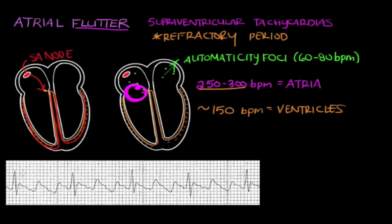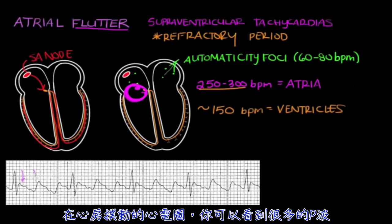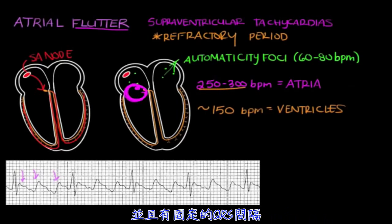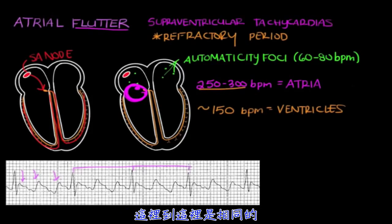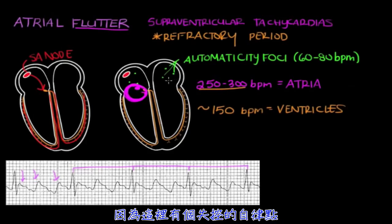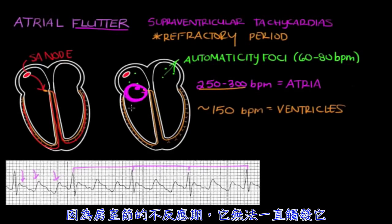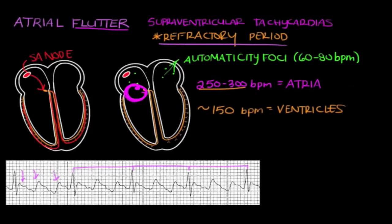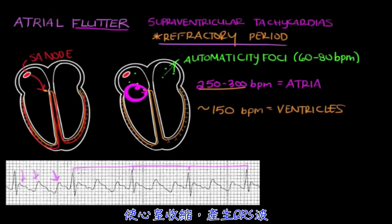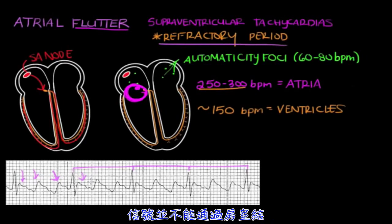With an atrial flutter EKG, you're going to see multiple P waves and regular spaced QRS intervals. The R-to-R interval is consistent throughout. The multiple P waves occur because the irritable automaticity focus is overfiring, but it won't conduct through the AV node every time because of the refractory period. So the focus fires, the atria contract, the signal hits the AV node, produces a QRS complex, then fires again — but during the refractory period it won't produce another QRS. Instead, you see another P wave.